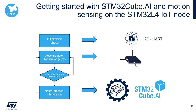Here we can see a high-level block diagram of the application. We have a first initialization phase with the configuration of the peripherals, like I2C and UART. Then we have an infinite loop where we acquire the accelerometer data, and when we have enough data, we call the neural network inference. The neural network will output the human activity recognition, such as stationary, walking, or running. In this example, we are using a simple neural network model, and we are more focused on the flow with STM32CubeIDE and STM32Cube.ai.